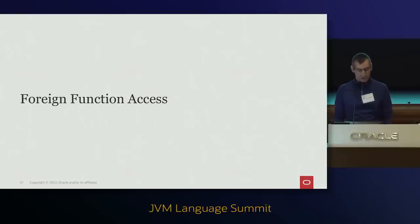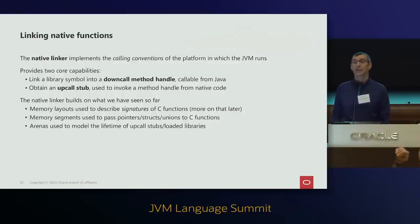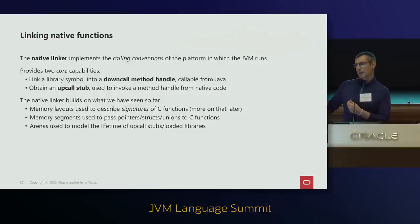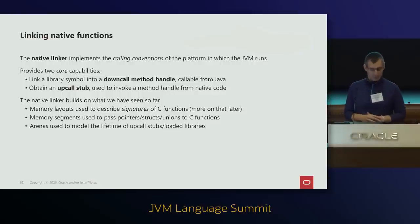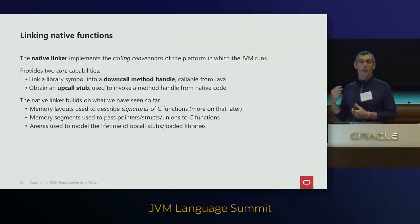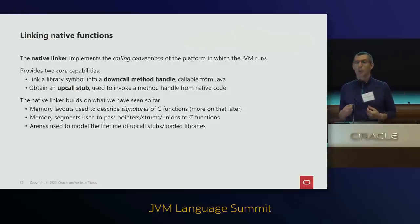Now let's switch to the foreign function access part of the FFM API. The star here is the native Linker. The native Linker is a component that lets you get a method handle pointing to a native function, and also provides the dual capability: given a Java computation expressed as a method handle, turn it into a function pointer you can pass to native code. The Linker is built on top of the abstractions we've seen: it uses memory layouts to describe signatures, memory segments to pass structs and unions, and arenas to model the lifecycle of upcall stubs.